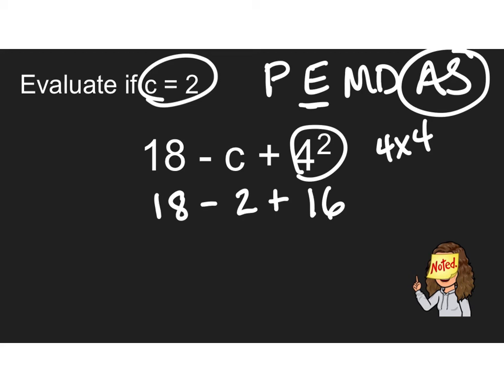Now according to PEMDAS, I do addition and subtraction from left to right. So 18 minus 2 is 16 plus 16. I know 15 plus 15 is 30. And then I've got 2 more. So 32.